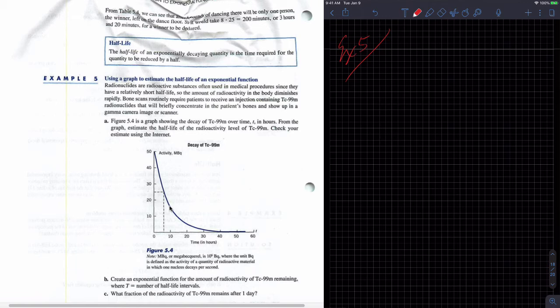So let's say that at 10, we're going to use the graph to estimate. So at 10, it looks like maybe I have this much. Maybe I don't want to do it that way. And we're talking about MBQs, whatever the hell that is. It's defined as the activity of a quantity of radioactivity in which one nucleus decays per second.